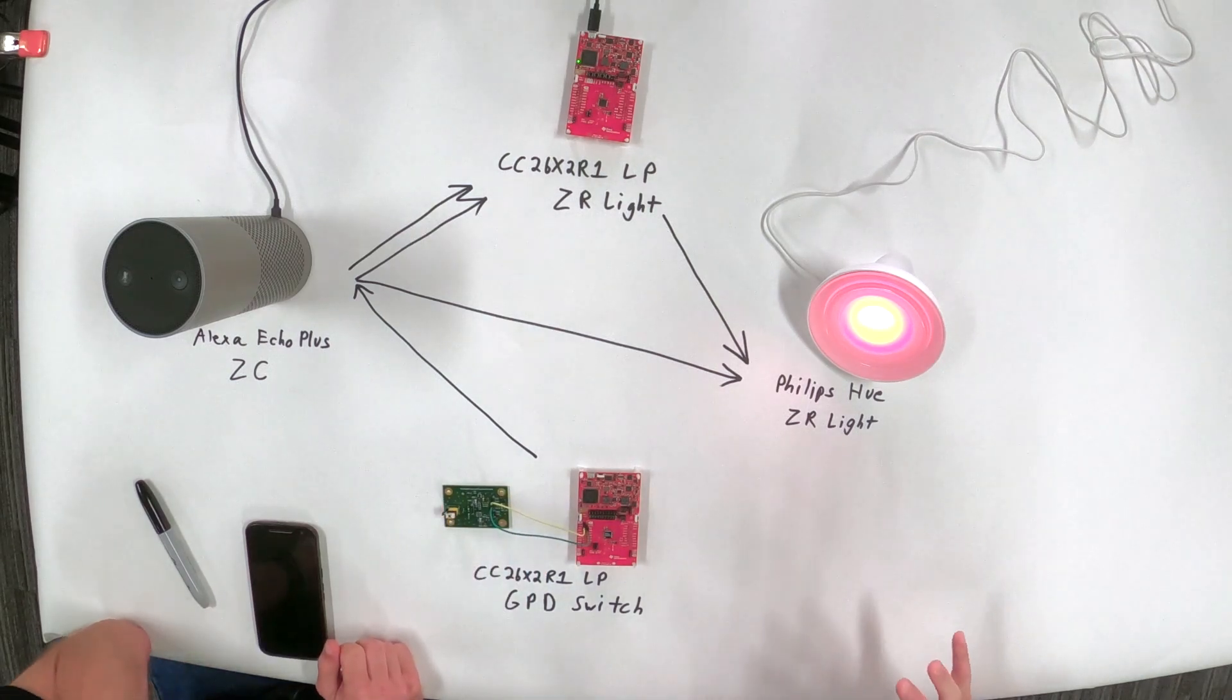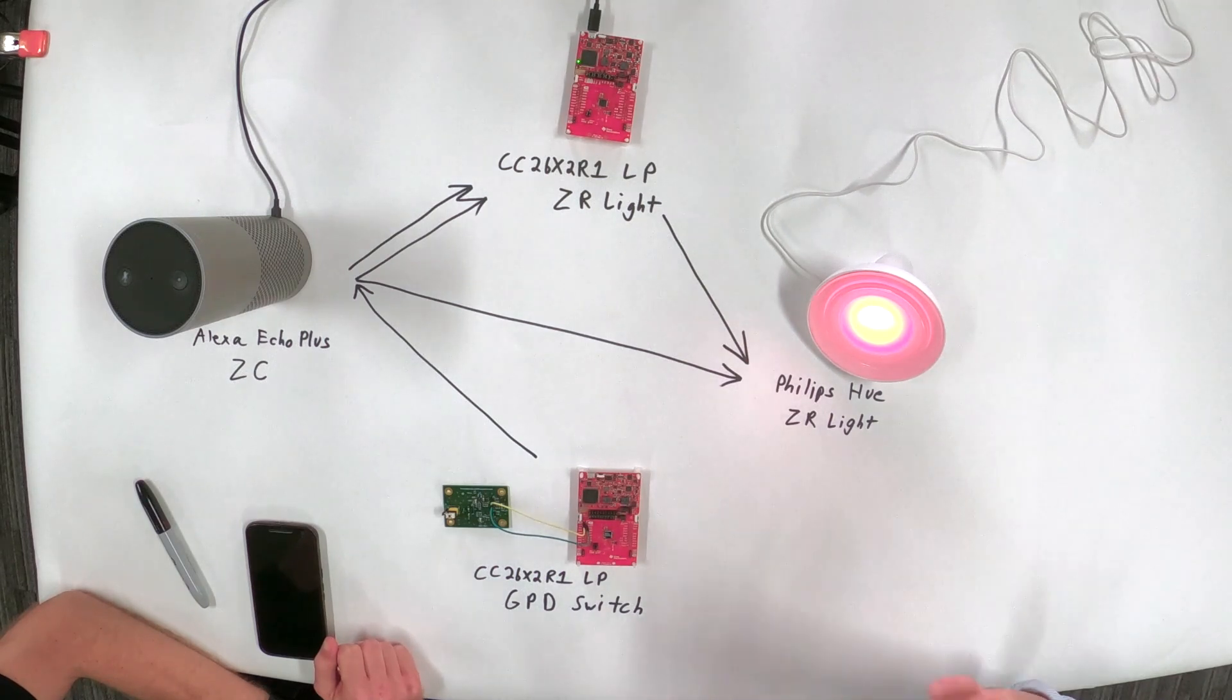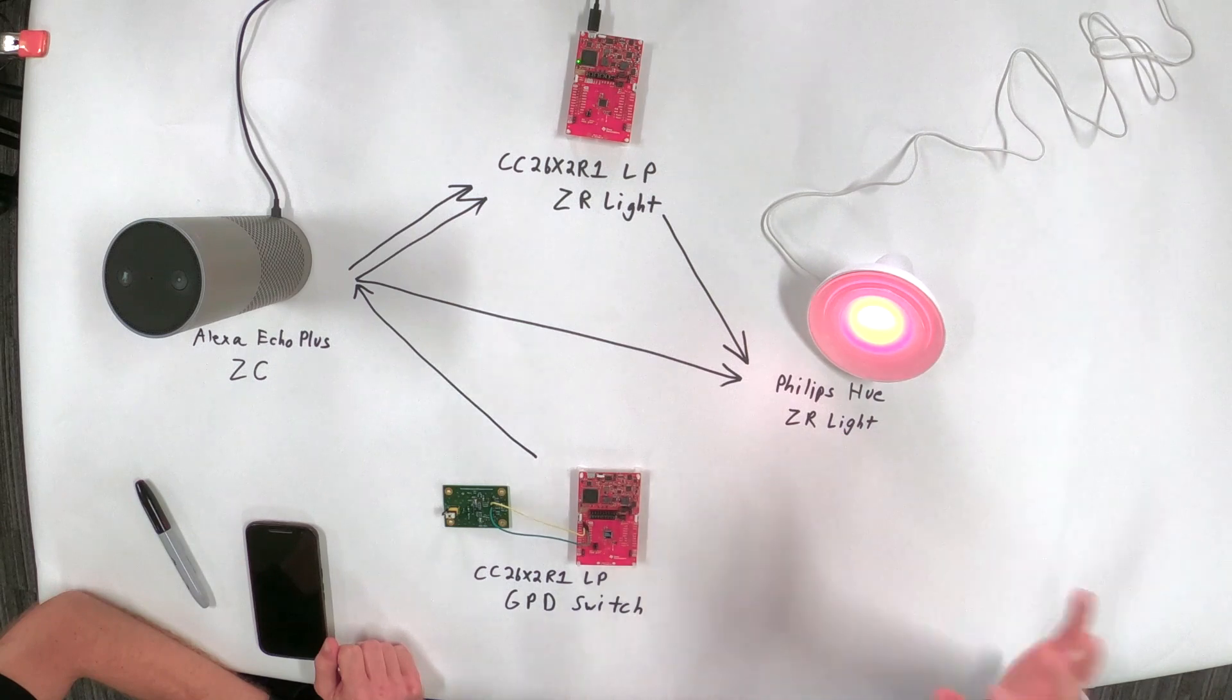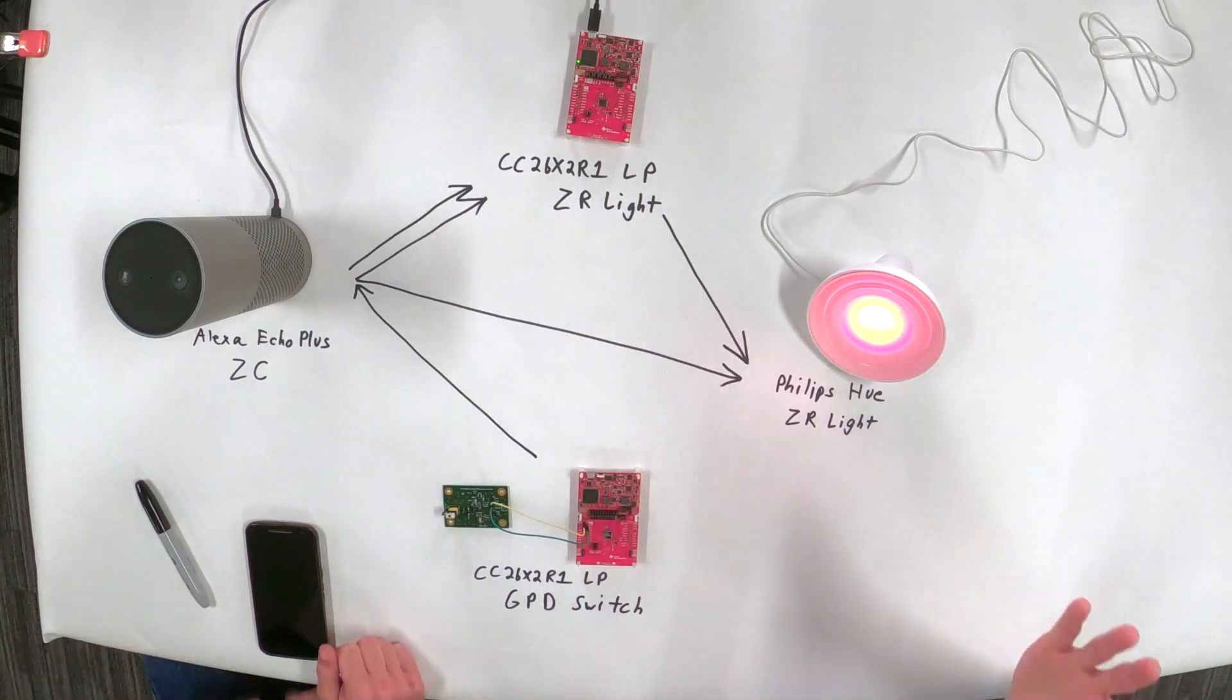And now it kind of drives home the interoperability point for me. Because I see you took TI Zigbee launch pad, SimpleLink Zigbee devices, a couple of off the shelf products, and you have a working demo, interoperating with the Zigbee network. Precisely. Very cool.